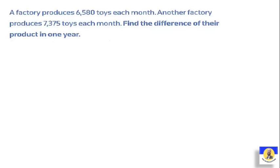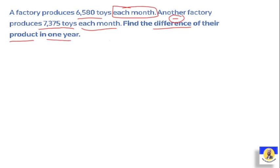Next question: A factory produces 6,580 toys each month. Another factory produces 7,375 toys each month. Find the difference in their production in one year. The question gives us monthly numbers but wants the answer in one year. Since a year has 12 months, we need to multiply each number by 12 first, then find the difference — or we can find the monthly difference first and then multiply by 12.